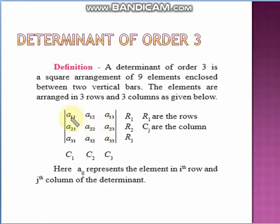The elements are denoted as a11, a12, a13 for the first row; a21, a22, a23 for the second row; and a31, a32, a33 for the third row. The suffix indicates the position of the element. For example, a32 means the element in the third row and second column. Similarly, a21 stands for the second row and first column.